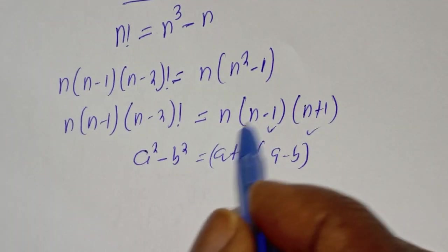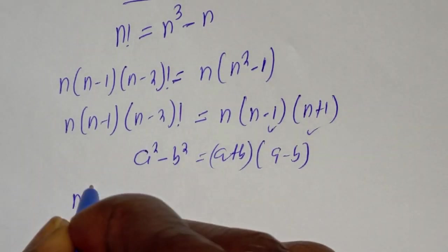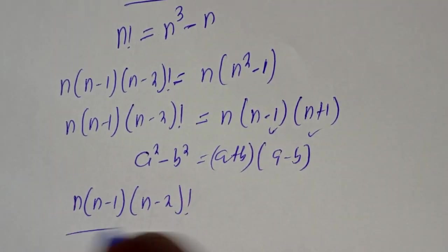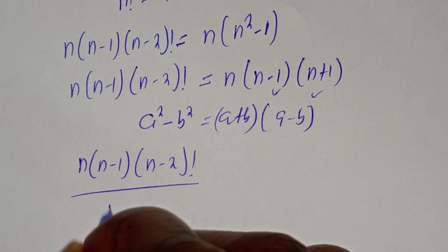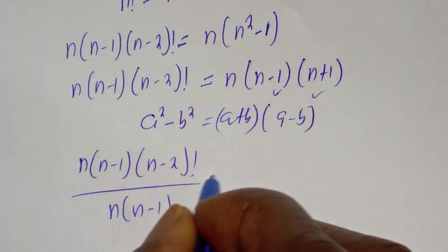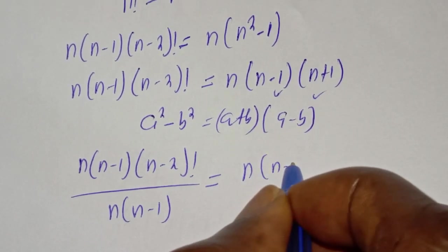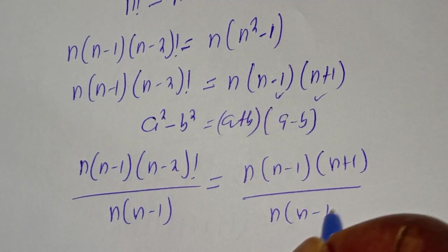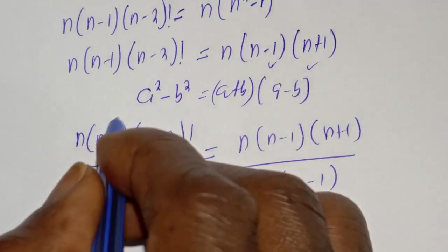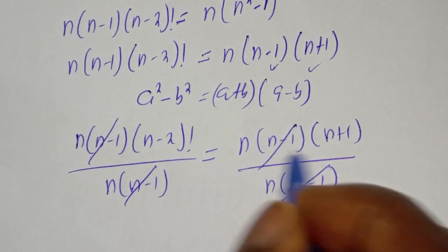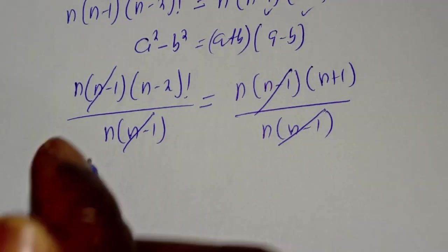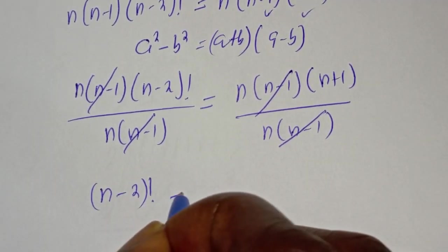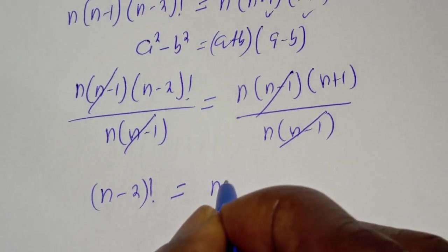Now, let's divide both sides of this equation by n bracket n minus 1. Here is n bracket n minus 1 bracket n minus 2 factorial over n into n minus 1, is equal to n bracket n minus 1 bracket n plus 1 over n bracket n minus 1. This will cancel this, this will cancel this. We have n minus 2 factorial is equal to n plus 1.